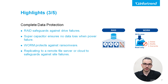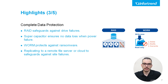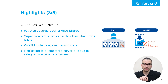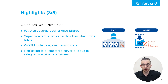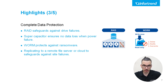WORM functionality protects your data against ransomware and unauthorized modifications by allowing data to be written only once and read as many times as needed. Once data is written to a WORM-protected storage, it cannot be altered or deleted, ensuring the integrity and authenticity of your data. In addition to local protection measures, our solutions support replicating data to a remote file server or cloud, safeguarding against site failures. By maintaining copies of your data in remote locations, you can ensure business continuity and disaster recovery readiness, even in the event of a catastrophic site failure.